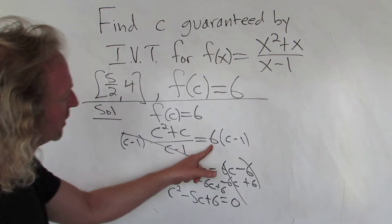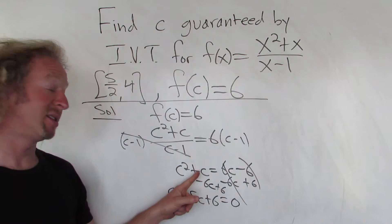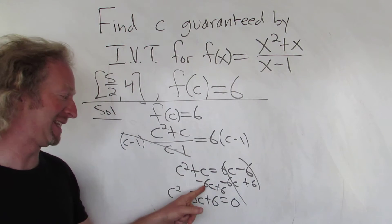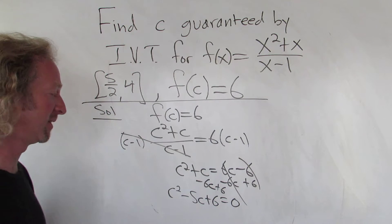Looks all right. So 6C minus 6. Subtract to 6C. 6C minus 6C is 5C plus 6 plus 6. Good stuff.